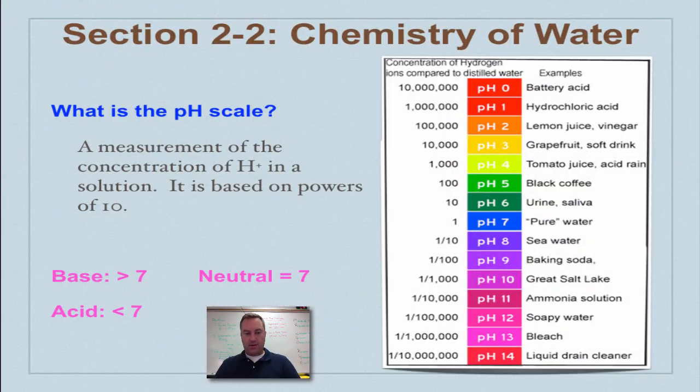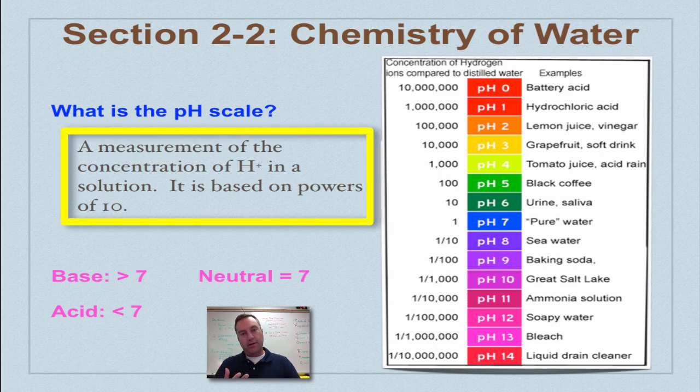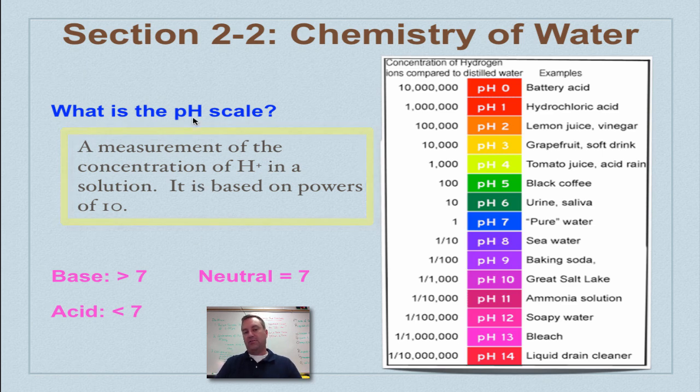All right, so let's look at the pH scale. What is the pH scale? pH scale is a way to measure the amount of hydrogen ions in a solution. In fact, the P stands for powers and the H stands for hydrogen. So pH comes from the powers of hydrogen. And it's based on the powers of 10. So this is a logarithmic scale.